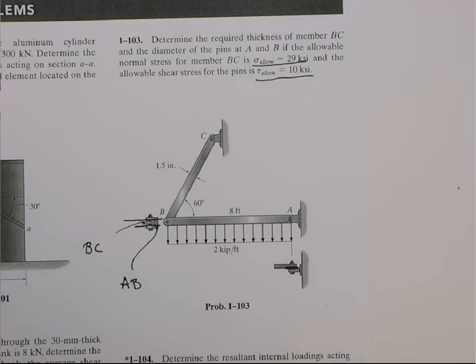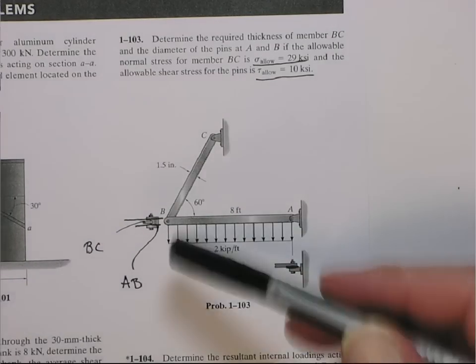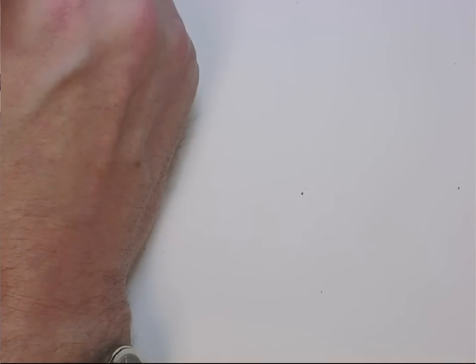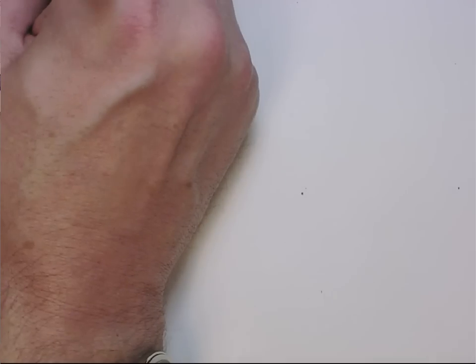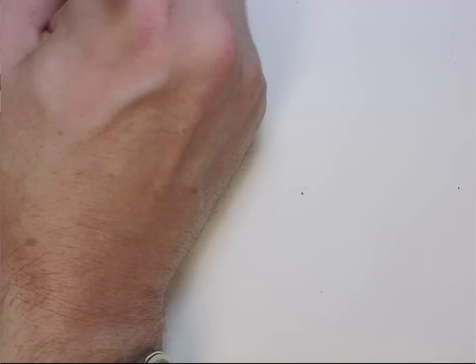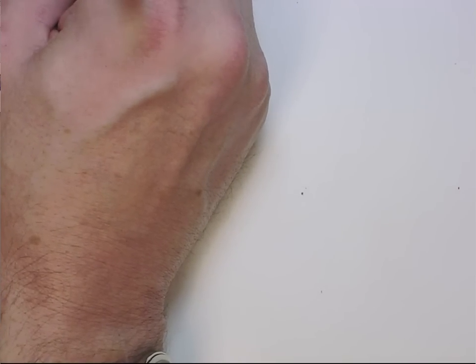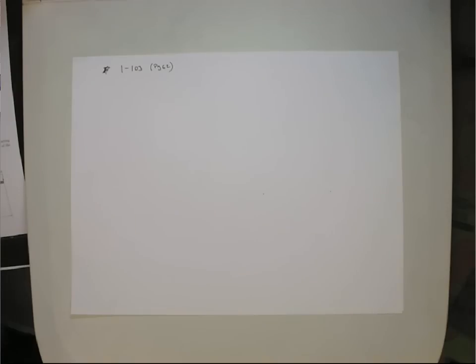Let's first do member BC — that's the normal stress part. This is problem F, a review problem 1-103, on page 62 in Hibbeler.